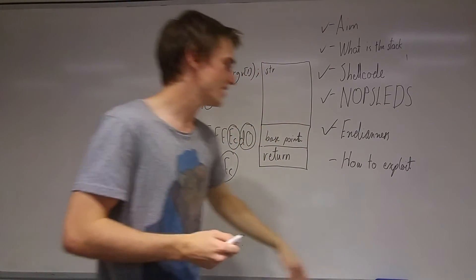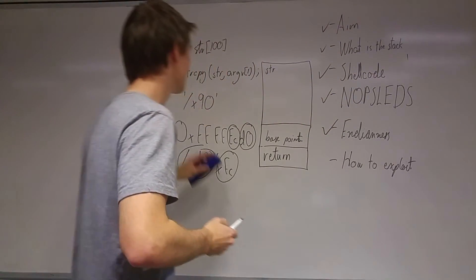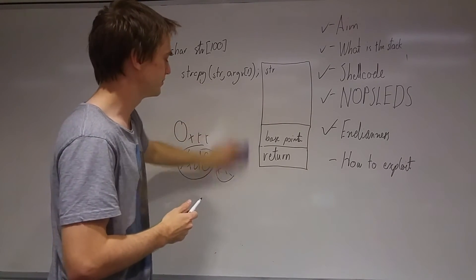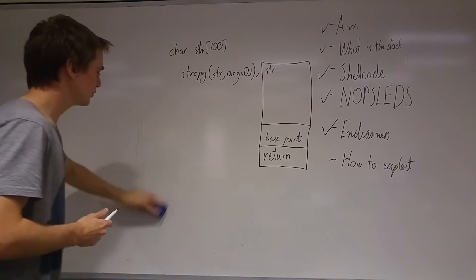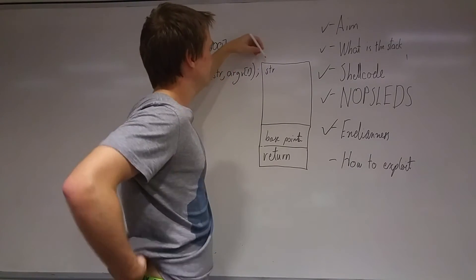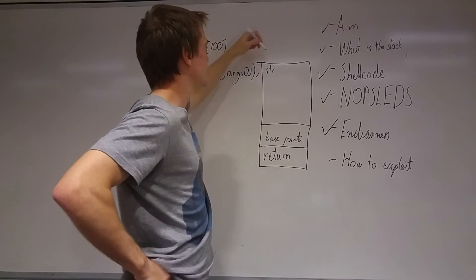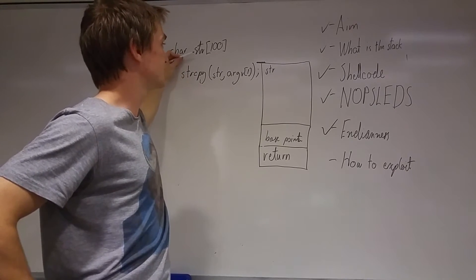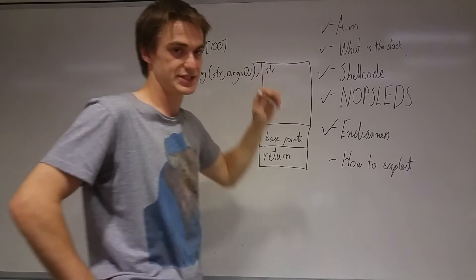Now we get to the fun part: how to actually use all this knowledge to exploit something. Now I think you've gotten most of the picture. But basically what we want to do is we want to find this here. We want to find the start address of our buffer.